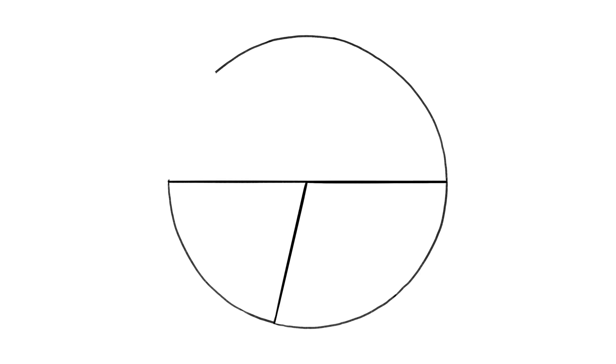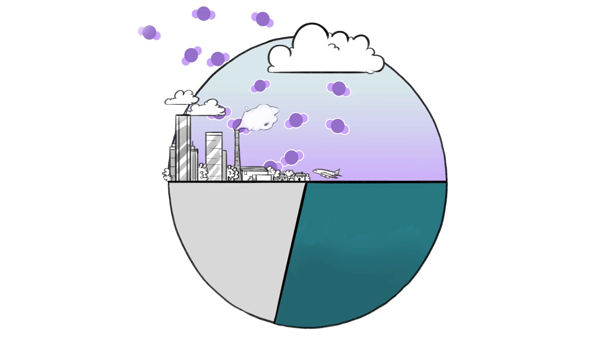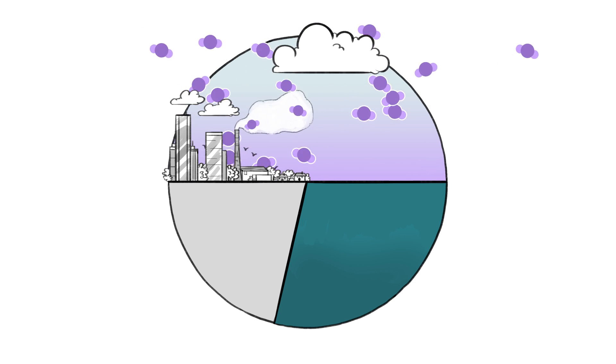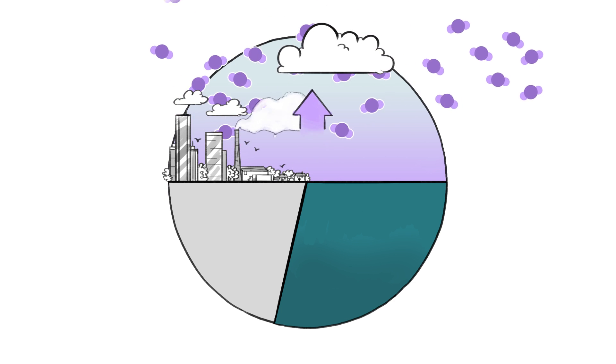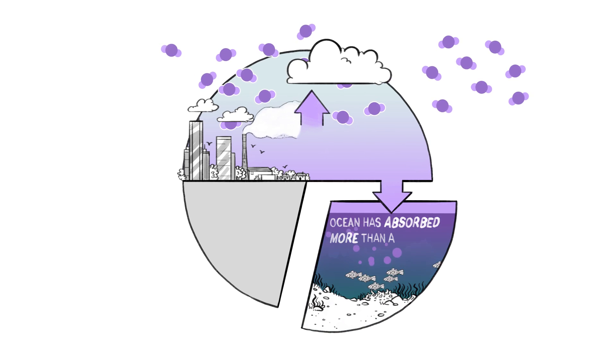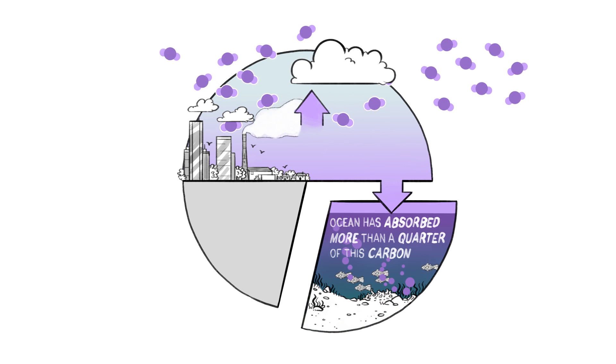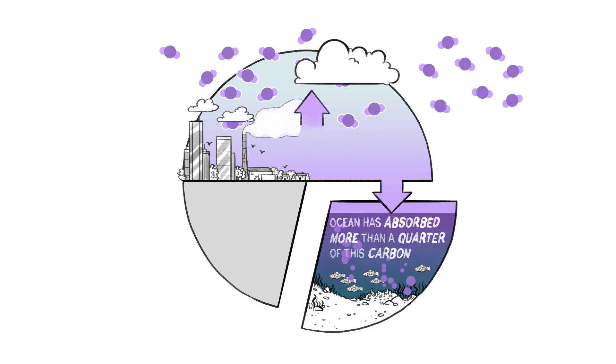Over the past 200 years, we have built a globalised economy based on fossil fuels and added 555 billion tonnes of CO2 to the atmosphere. The ocean has absorbed more than a quarter of this carbon, thereby increasing seawater acidity by 30%.